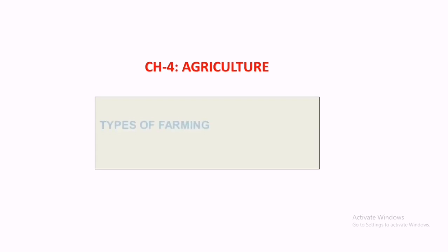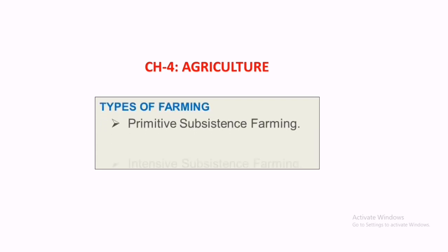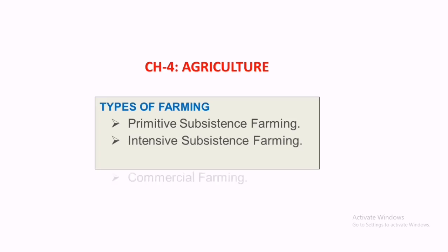Chapter 4: Agriculture. The major topics — first of all, types of farming. There are three types of farming existing in our country: primitive subsistence farming, intensive subsistence farming, and commercial farming. We can discuss details about each one.